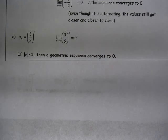We can have a geometric sequence where we have a sub n defined as 3 fifths to the n. And in this case, our r value is less than 1, or the absolute value of the r value is less than 1. So we know that this geometric sequence is going to converge to 0.